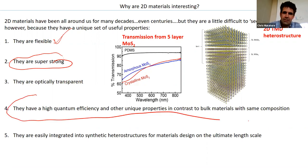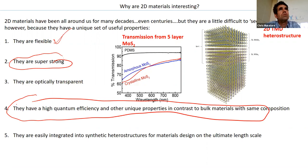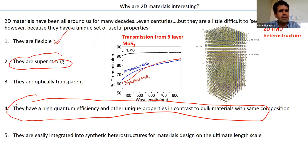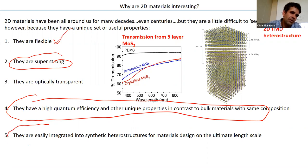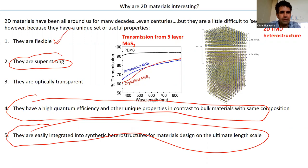What becomes really interesting is when you want to use these materials in devices. They have pretty exquisite properties. Graphene has ultra-high electron mobility or charge mobility. You can have really high quantum efficiency — for every photon in, you can generate a photon out for some two-dimensional transition metal dichalcogenides especially. All those things are pretty interesting.